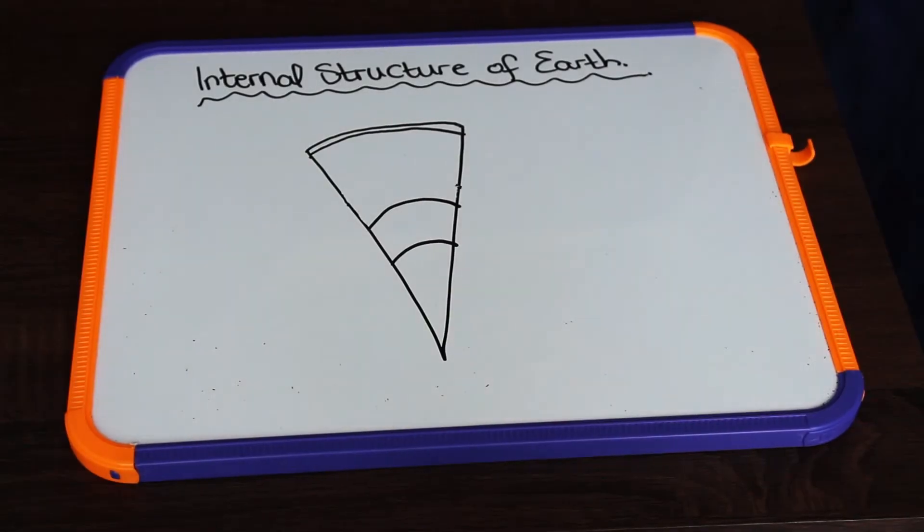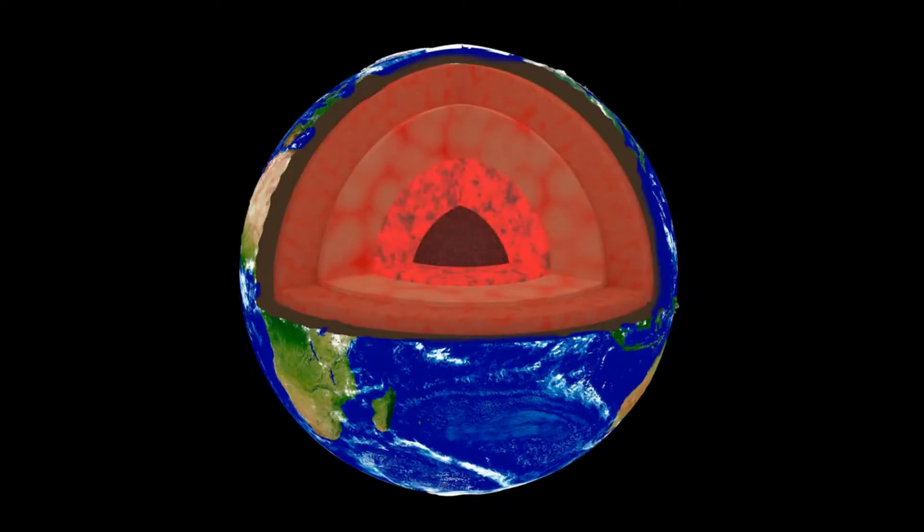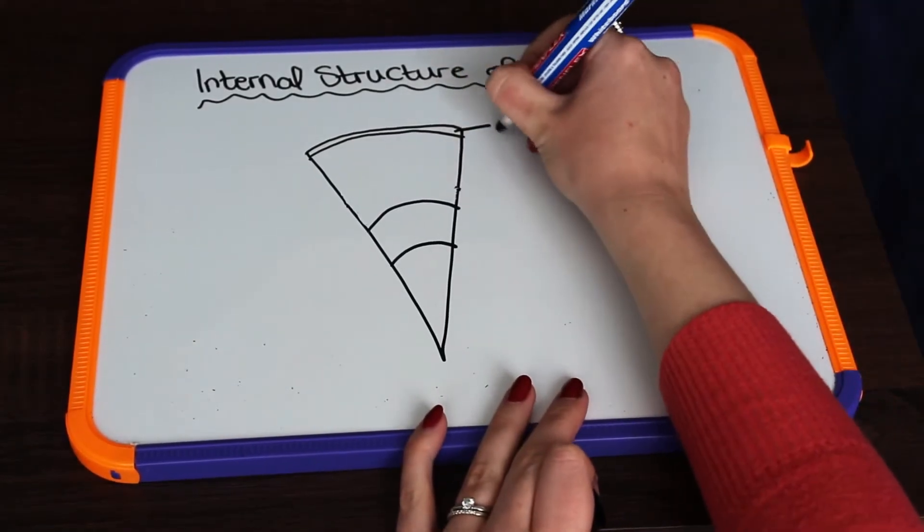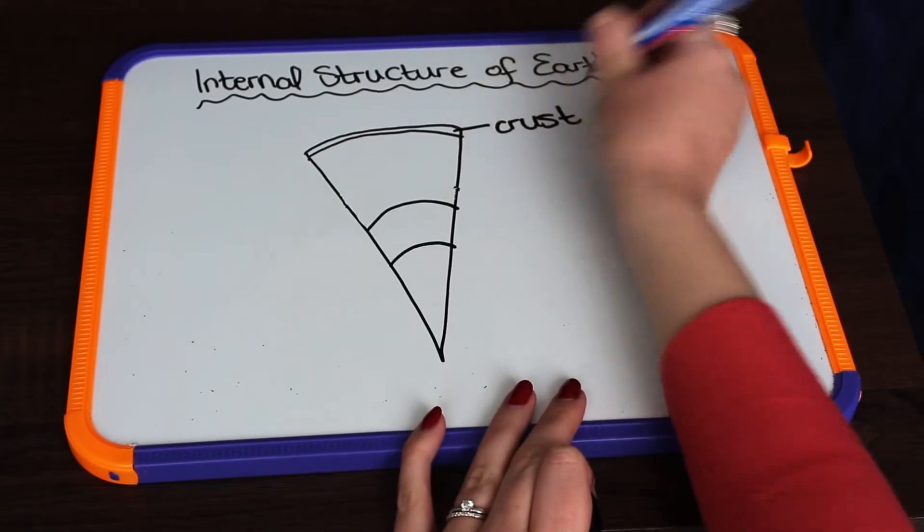To give you an idea of where we are looking at this rock formation, we can look at the internal structure of the earth. So if we were to take a slice out of our earth, we would have the crust which is right at the top - that is what we live on.